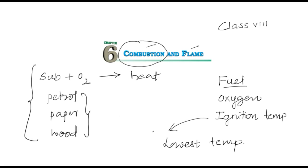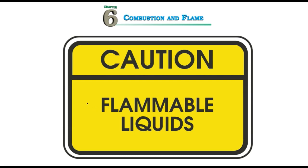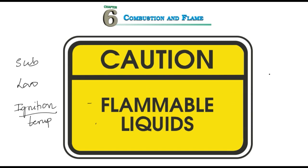You must have seen on some vehicles a caution written: 'flammable liquid.' Flammable, or inflammable, substances are those which have a very low ignition temperature. For example, phosphorus (symbol P) catches fire at 30 degrees centigrade, which is why it is stored in water. Substances with a low ignition temperature can catch fire suddenly and are called flammable or inflammable substances.